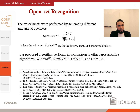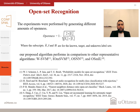For open set recognition, experiments were performed by generating different amounts of openness. Openness is defined as one minus the square root of two times YT divided by YT plus YU, where YT is the label of target classes, YK is the label of known classes, and YU is for new or unknown classes. Testing includes all classes, while training is done only on known classes. The target classes are those we expect to recognize during testing.